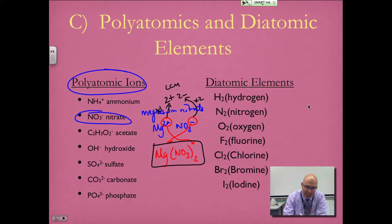For the diatomics, I like to remember hydrogen first, then nitrogen, oxygen, fluorine, chlorine, bromine, and iodine. These form a seven shape on the periodic table: hydrogen at the top, then nitrogen, oxygen, and down through the halogens.